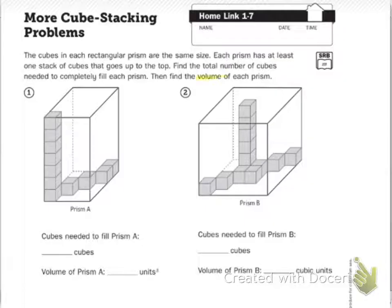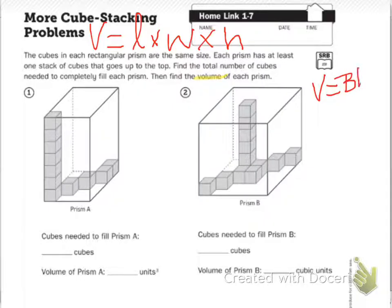We learned today that highlighted word, volume. We know volume can either be volume equals length times width times height, or it can be the area of the base. So I'm writing it over this way. Volume equals base times height.